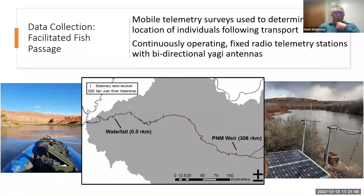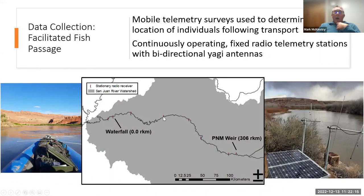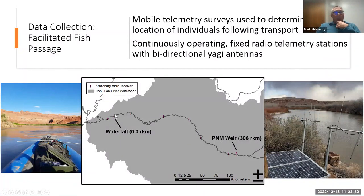Matt did mobile telemetry surveys — in boats with a receiver, he moved downstream from PNM Weir all the way down. At various locations we also had fixed radio antennas where if a fish swam past we knew its direction of travel — one upstream and one downstream. One of the most important antennas was right at the waterfall, so Matt could tell how soon fish came back downstream after being moved upstream. The same approach was used at PNM for fish moved upstream there.